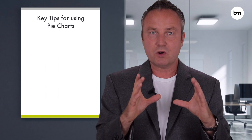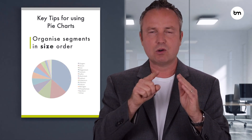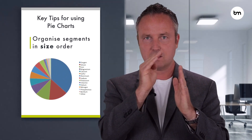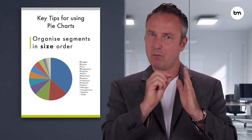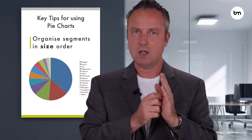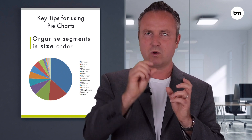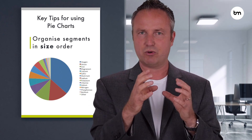So for pie charts, if you must use them, I've got some key tips. The most important one is to at least order them by size of your slices — either start with the smallest and go to the biggest, or start with the biggest and go to the smallest. This makes comparison a lot easier. What I see in practice is pies produced where you have big ones, small ones, and medium ones all next to each other, which really makes it hard for the brain to understand.